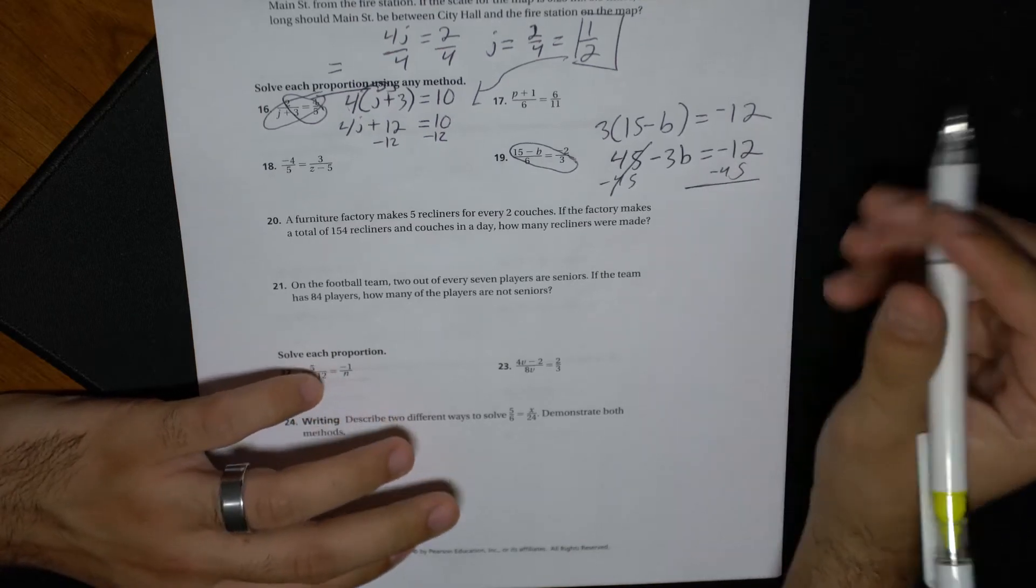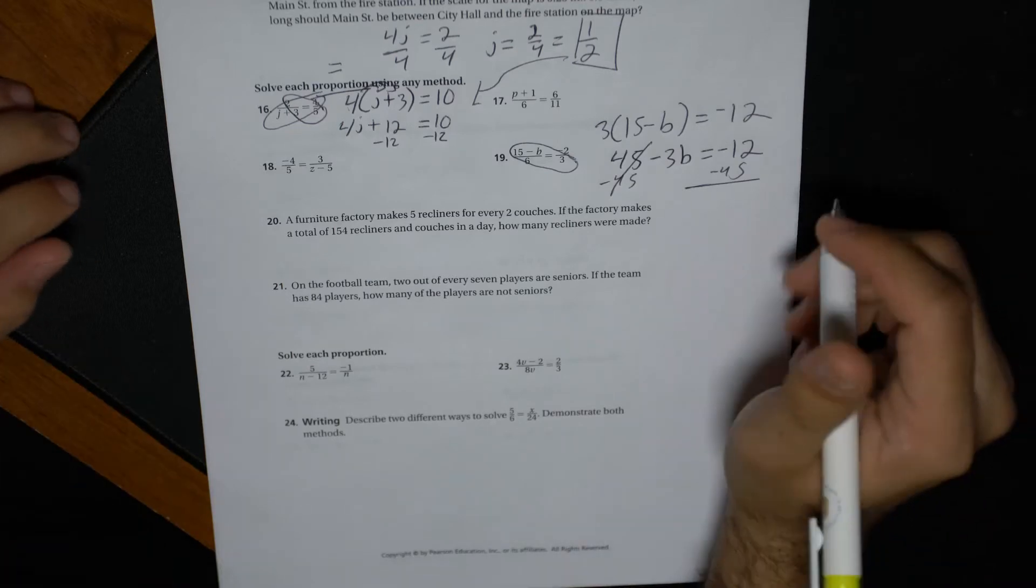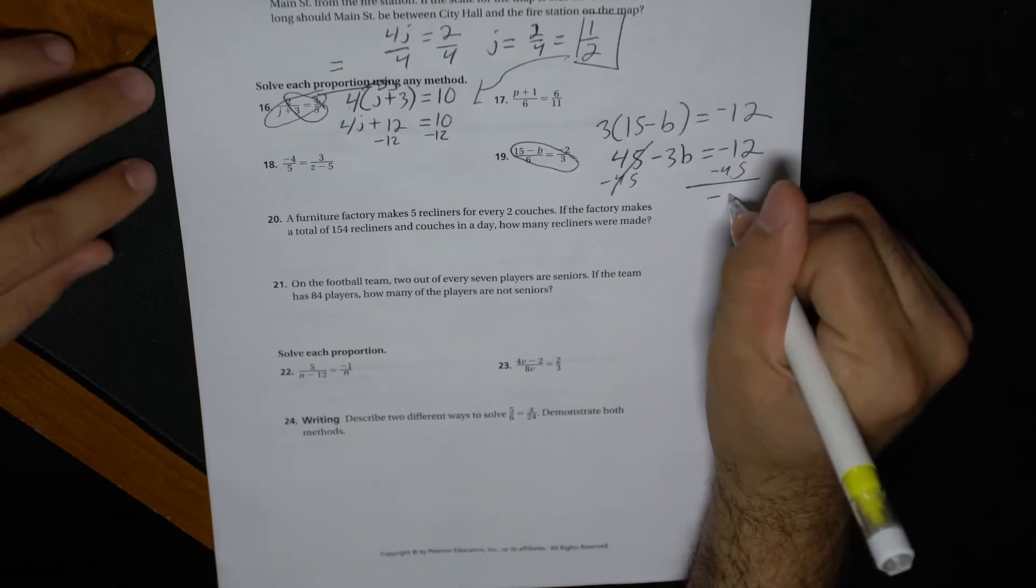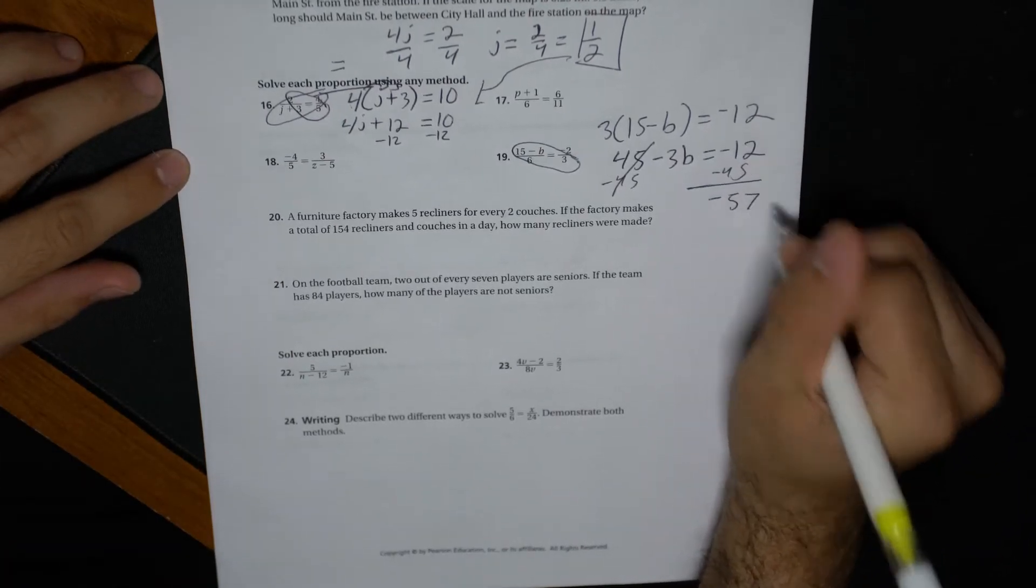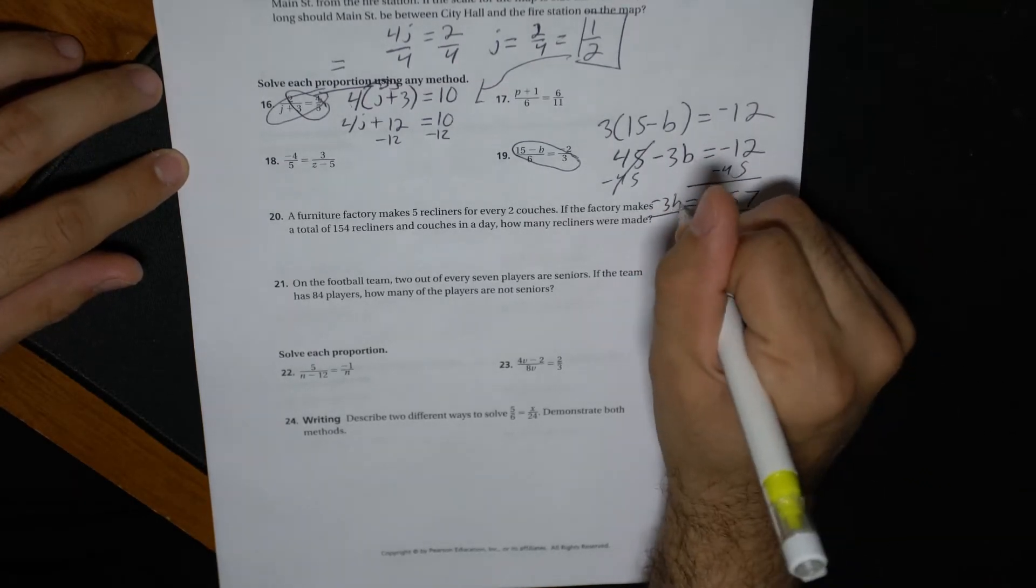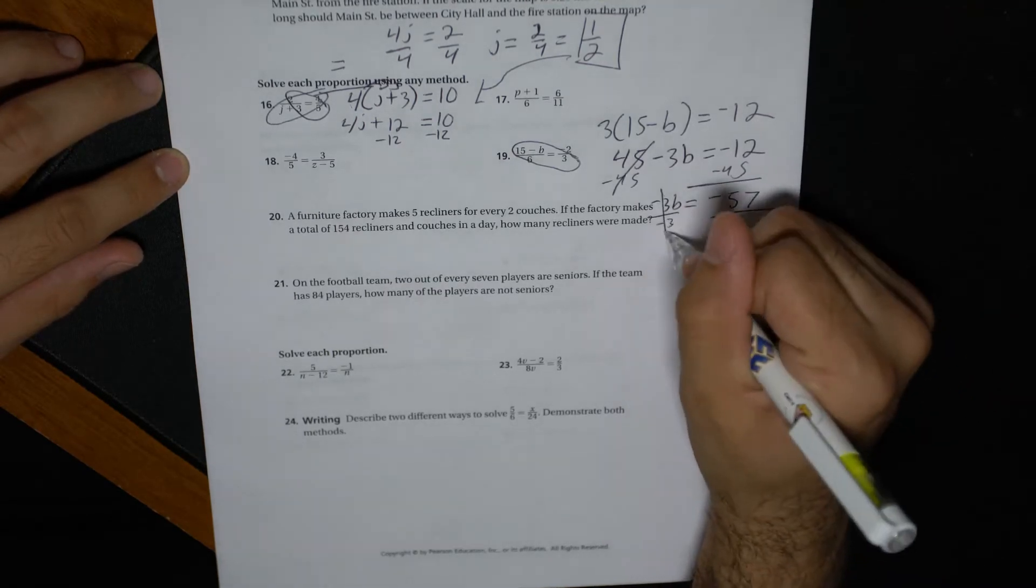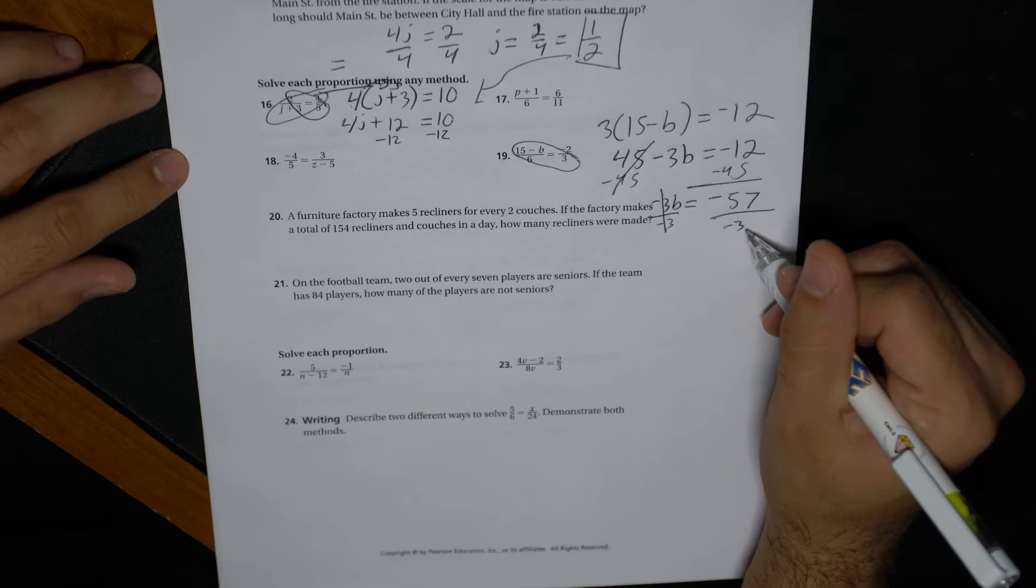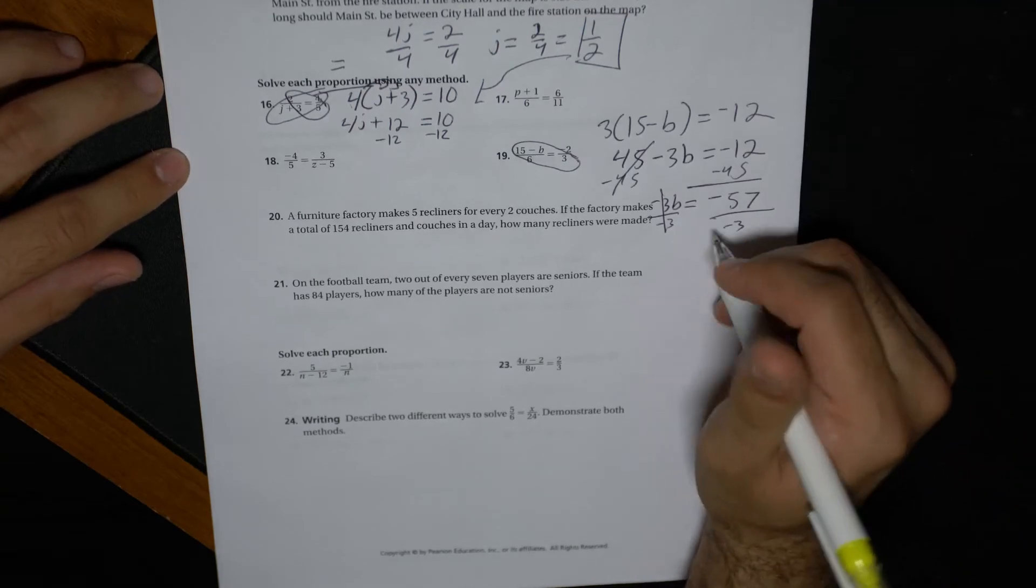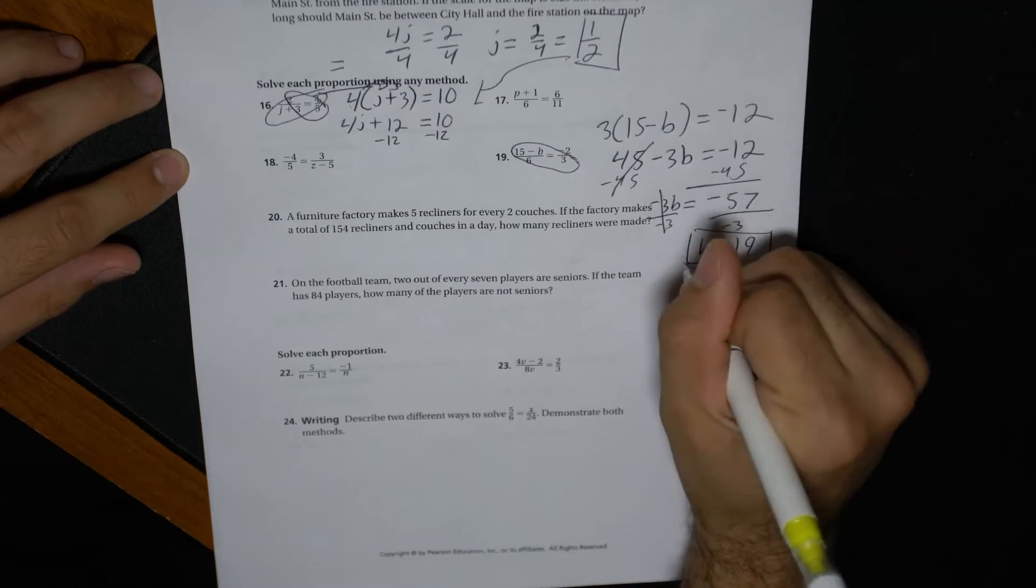Now notice how the 12 and the 45 are both negative. That means we're going to add them. It's like having depth and then having more depth. You're going to combine them. Nobody likes depth. So that's 57 equals negative three. Divide both sides by negative three. Negative divided by negative becomes positive. And then three goes into 57, 19 times. So b equals positive 19.